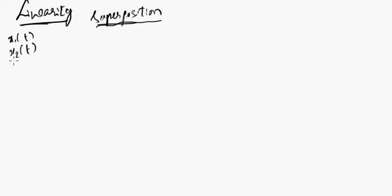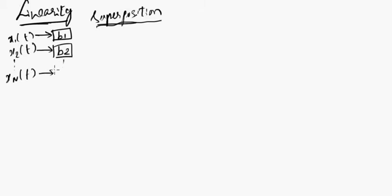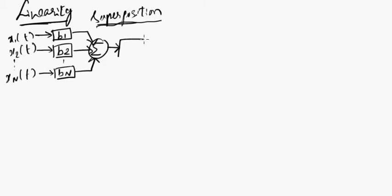Say for example we have a set of inputs X1(t), X2(t), till Xn(t). Now we will scale this input by a factor b1, this input by a factor b2, and this input by a factor bn. Whatever intermediate outputs we get after this stage, we are going to add all these things and feed that signal to a system that has a response called H.